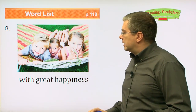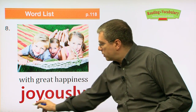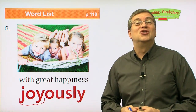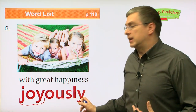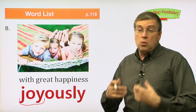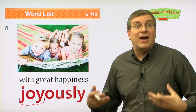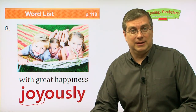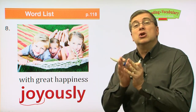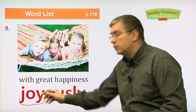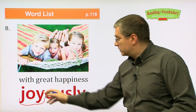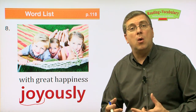Next one: these kids are having fun with great happiness. What do we say? Joyously. Joy means happy — you're very happy. But we say joyously — it means with great happiness. This describes how you do something or how something is done. If you watch a TV show with a lot of happiness, you are watching joyously. If you read a book and you're really happy while reading it, you read the book joyously. This word goes with verbs — read joyously, watch joyously, play joyously — to describe how the action is done.